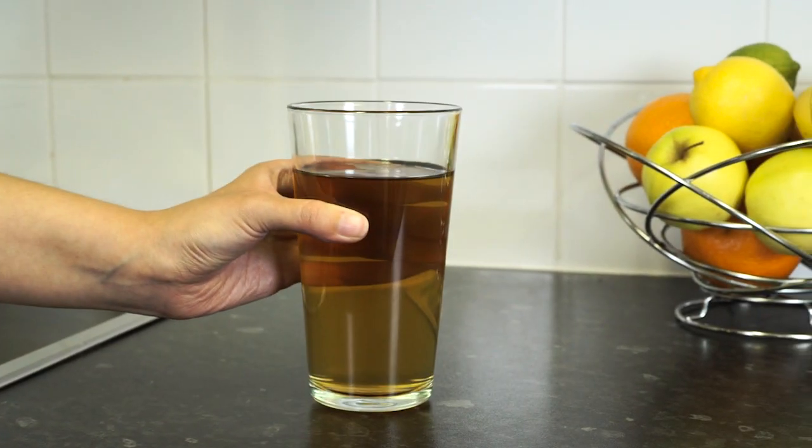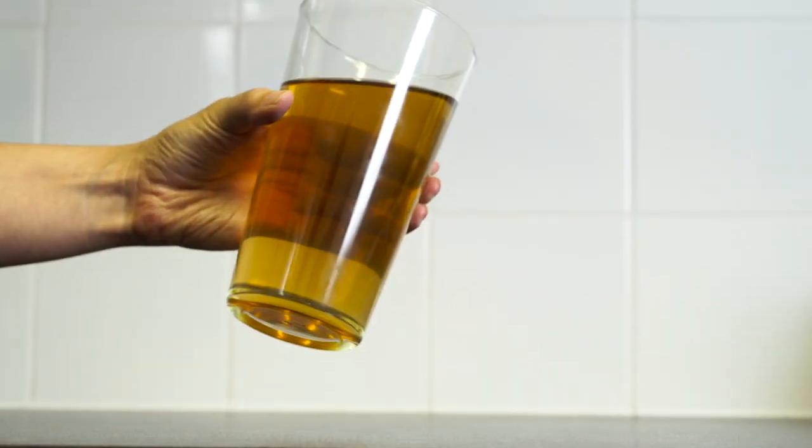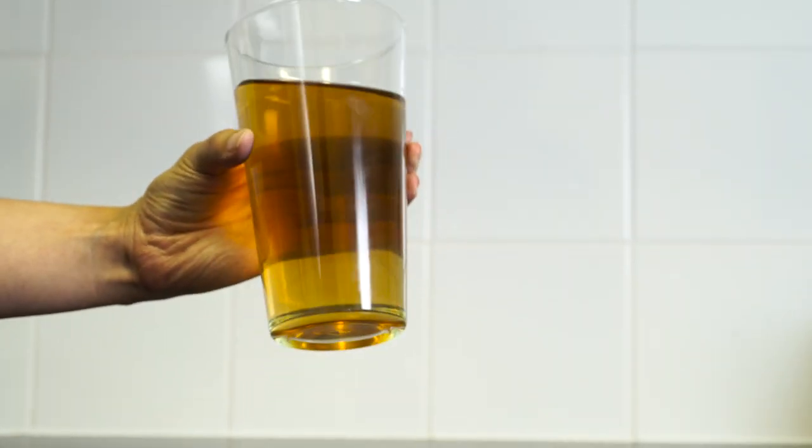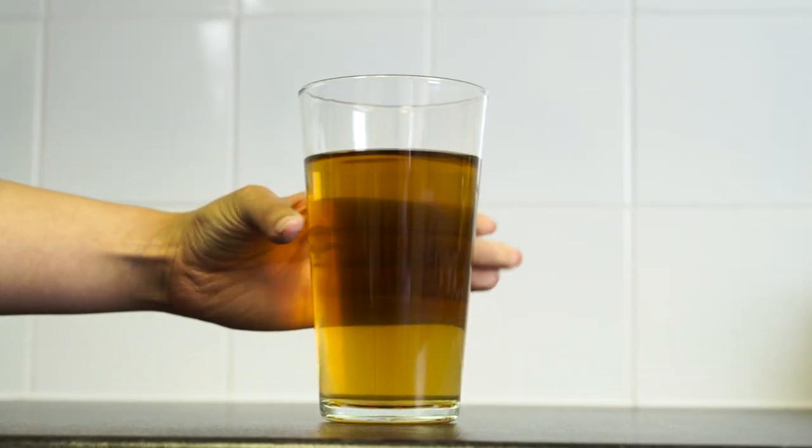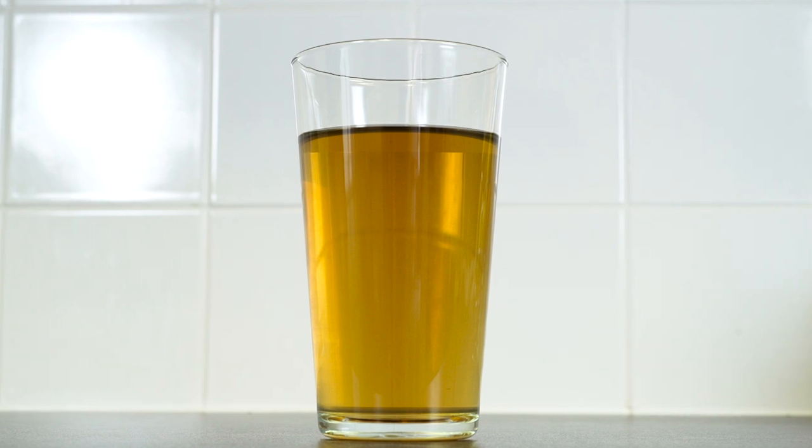Sometimes the water can look yellow, brown, black, or orange. You may also see small bits in the water. If this happens, don't worry. This is usually caused by disturbance of metal particles that lie at the bottom of the water mains, such as iron and manganese.